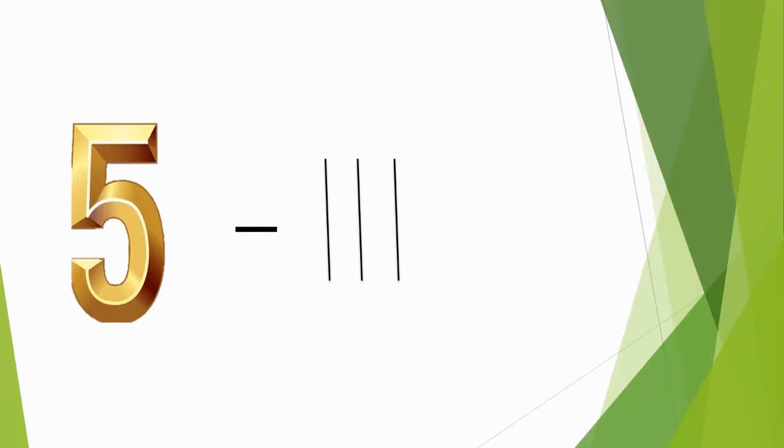Number 1 is represented by one standing line. Number 2 is represented by two standing lines. Number 3 is represented by three standing lines. Number 4 is represented by four standing lines. Number 5 is represented by four standing lines and one slanting line — it makes a group of five.